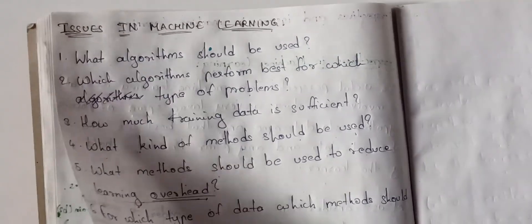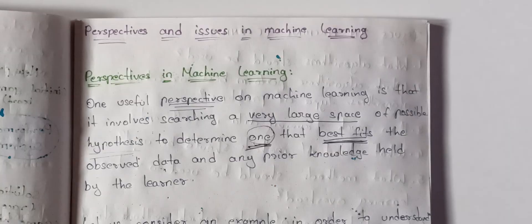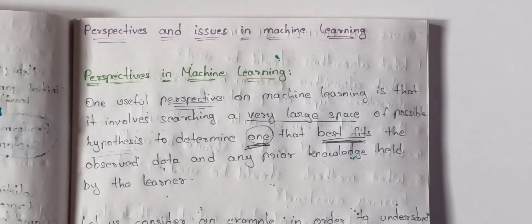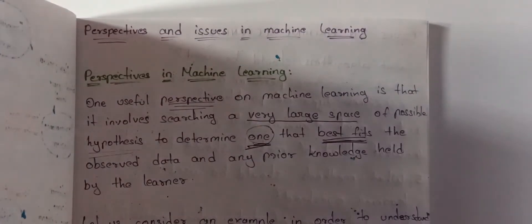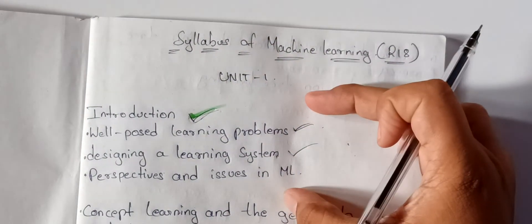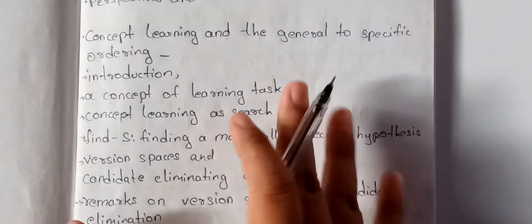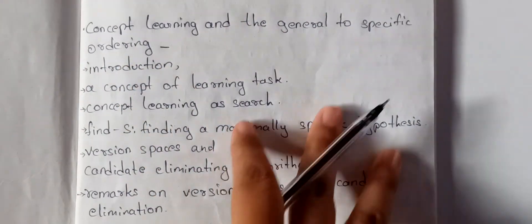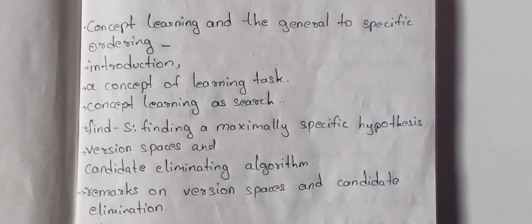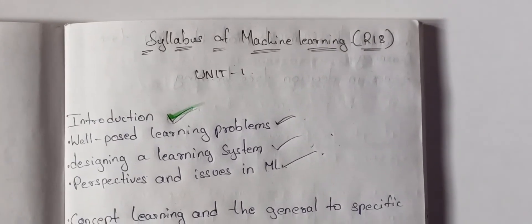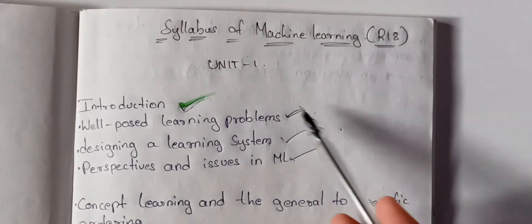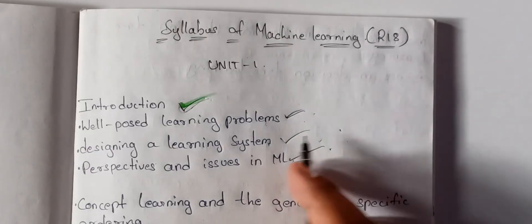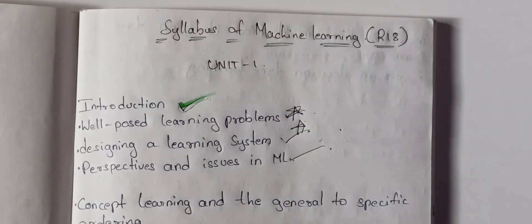So those are the issues in machine learning. This covers perspectives and issues in ML as a small but important part of machine learning. Next, we will cover concept learning and the general-to-specific ordering in upcoming videos. Thank you — please like these videos. Any doubts, we will definitely reply. Thank you.